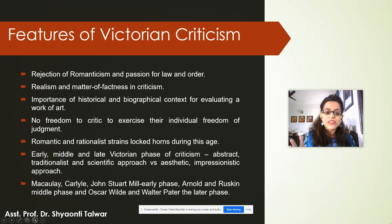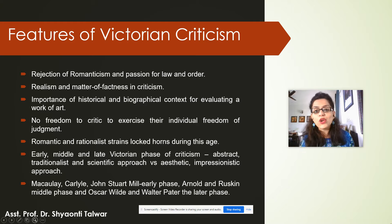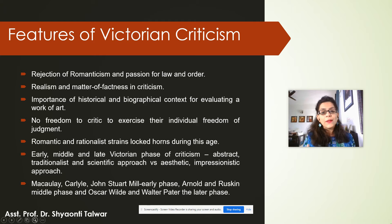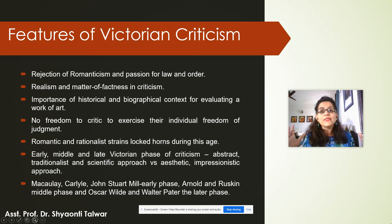It was the abstract, traditionalist, and scientific approach of the early and middle Victorians versus the aesthetic and impressionistic approach of the late Victorians. Macaulay, Carlyle, and John Stuart Mill were critics of the early Victorian phase, succeeded by Arnold and Ruskin in the middle Victorian age, who espoused the idea of art for life's sake — that art needs to have moral values and reflect life's realities. In the late Victorian phase, writers and critics like Oscar Wilde and Walter Pater advocated art for art's sake, focusing on the aesthetics and impressionistic potential of art.